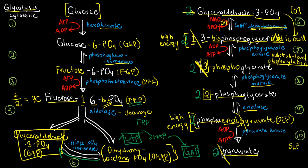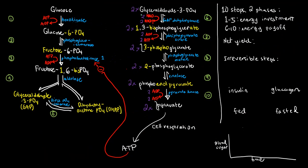Since pyruvate has 3 carbons and we now have 2 molecules of pyruvate, we account for all 6 carbons from the original glucose. The law of conservation of matter is satisfied. All cofactors and products accompanying steps 6 through 10 — including NADH and ATP — must also be multiplied by 2, since they always accompany the corresponding amount of substrate.